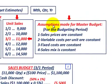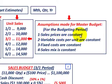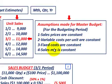The assumptions made for the master budget and the budgeting period are: first, sales prices are constant; second, variable costs on a per unit basis are constant; third, fixed costs are constant; and fourth, our sales mix is constant. We have to have these assumptions for our master budget, and they apply to our sales budget as well.